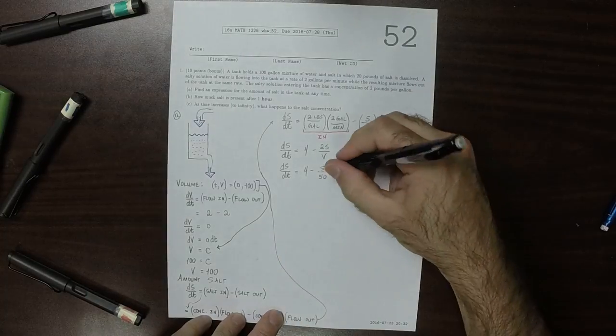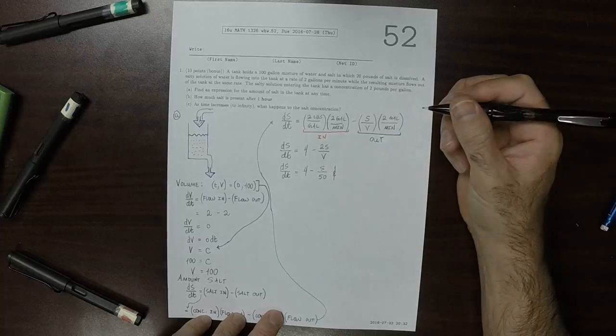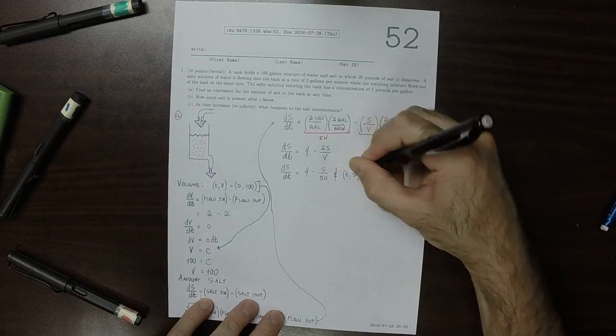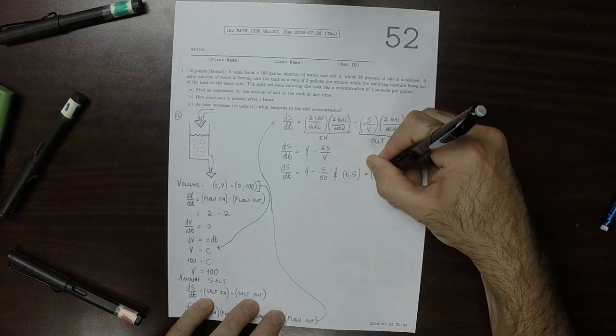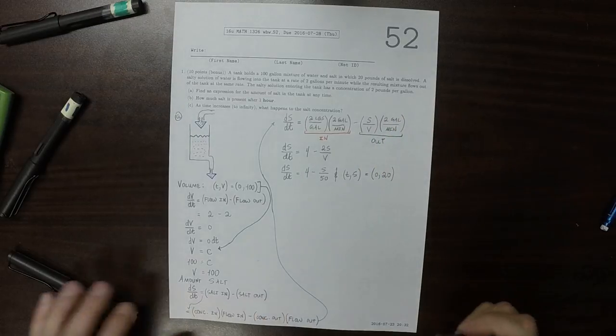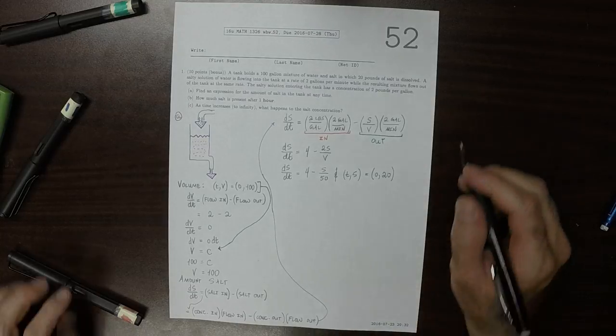And the initial data that we have is that at t equals 0, S equals 20.